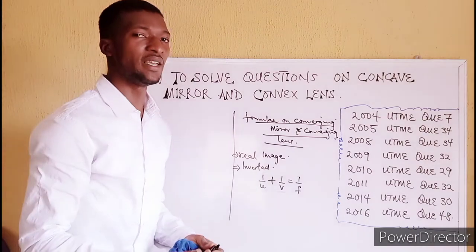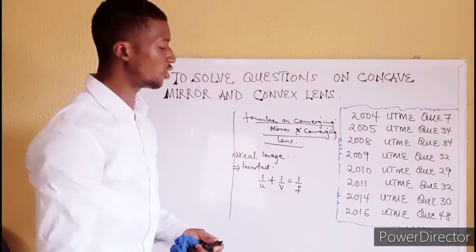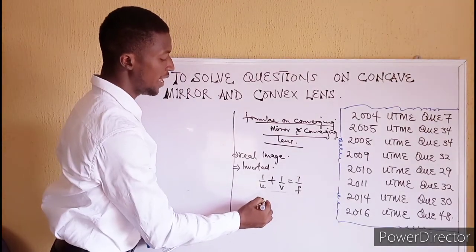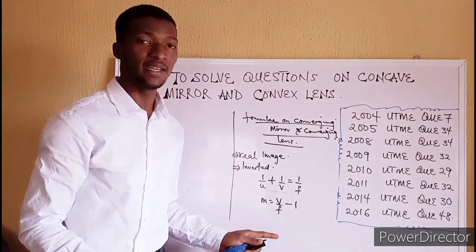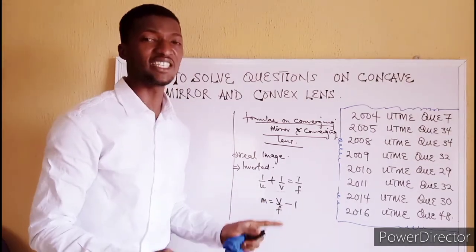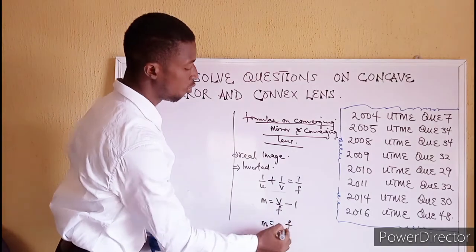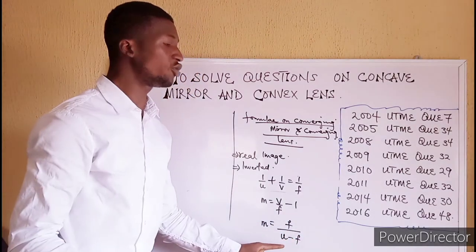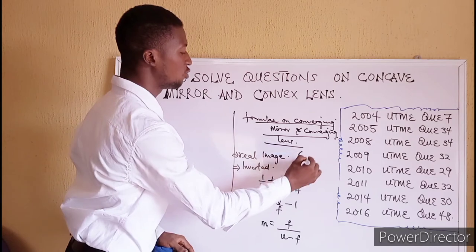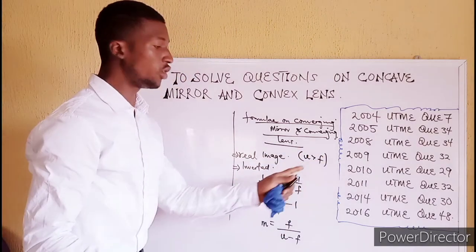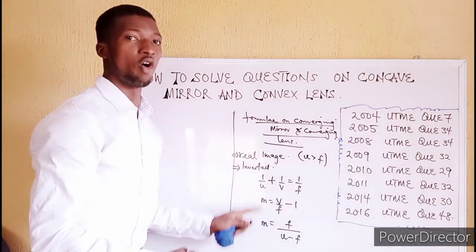If you are dealing with linear magnification, the formula is M = V/F − 1. But in a case where V, the image distance, is not given and instead you are given the object distance, you can use M = F/(U − F). This applies when the object distance is greater than the focal length. When your object distance is greater than your focal length, you can use either of those formulas depending on the parameter given or the parameter you are looking for.